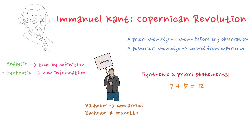This might seem purely mathematical, but Kant argued that it is not analytic. The concept of 12 is not already contained in 7 plus 5 in the same way that 'unmarried' is contained in 'bachelor.' Instead, we must synthesise the two numbers together to arrive at 12. However, we do not need experience to know that this equation is true — it is something we can understand purely through reason, making it a priori.